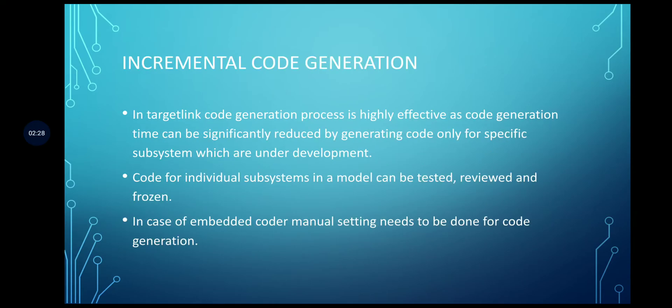Then the next one is incremental code generation. In TargetLink, code generation process is highly effective as code generation time can be significantly reduced by generating code only for specific subsystems which are under development. Code for individual subsystems in a model can be tested, reviewed, and frozen. But in case if you are going for other embedded coders, the code generation time will be more as it won't give us the incremental code generation feature.